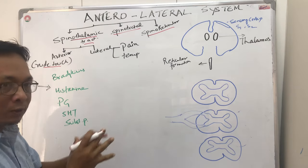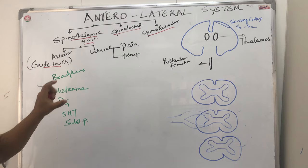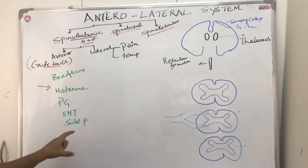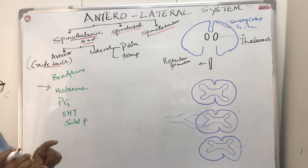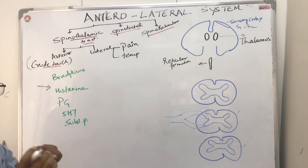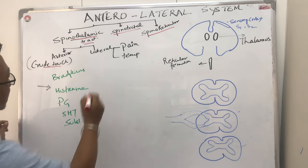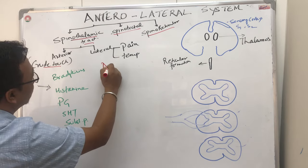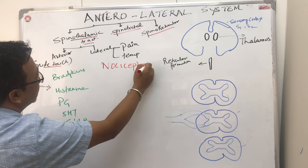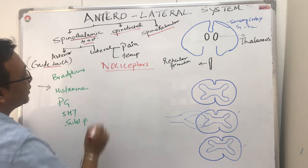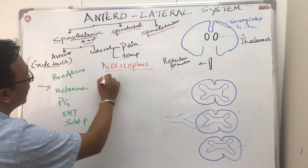Let's start with the pathway of the tract. When we start with the pain pathway, we have to remember that pain is sensed by receptors called nociceptors. The receptors responsible for the pain signals are called nociceptors, and they are free nerve endings.